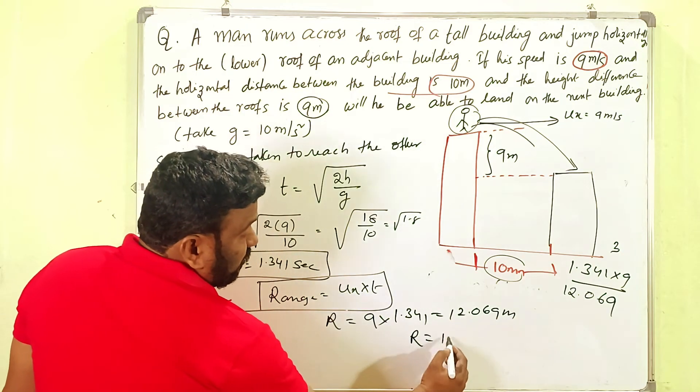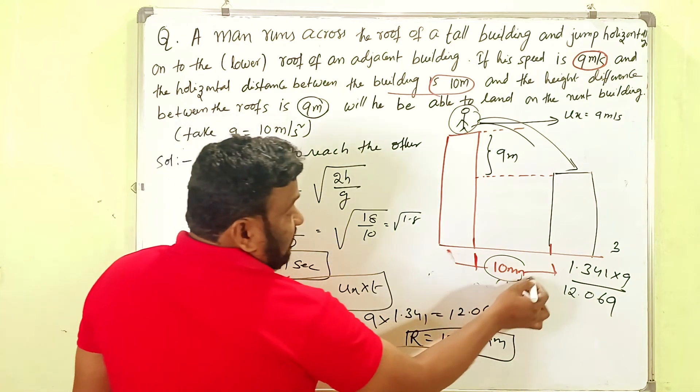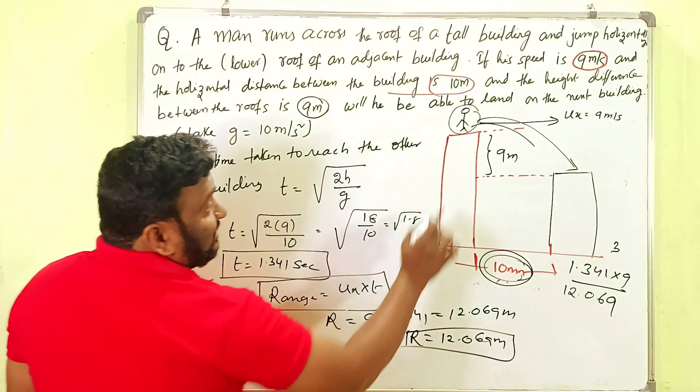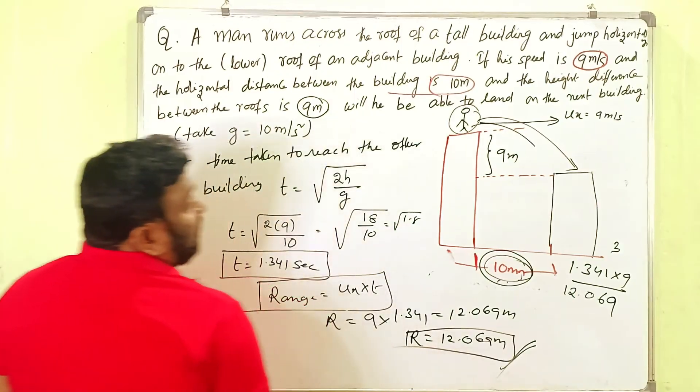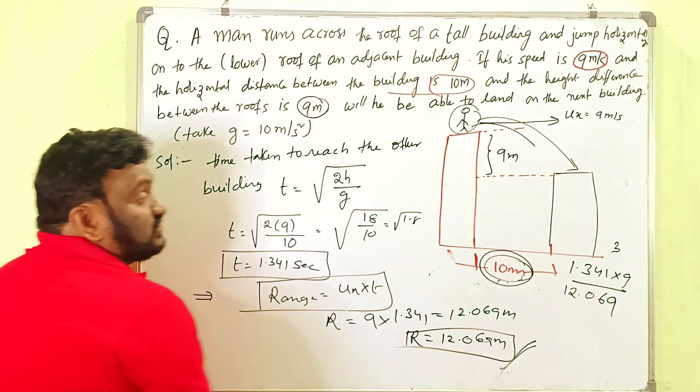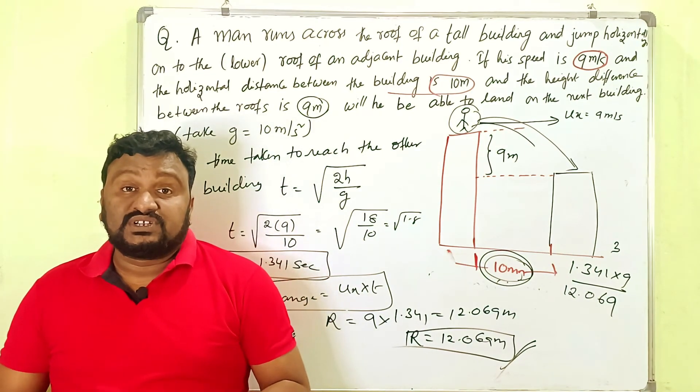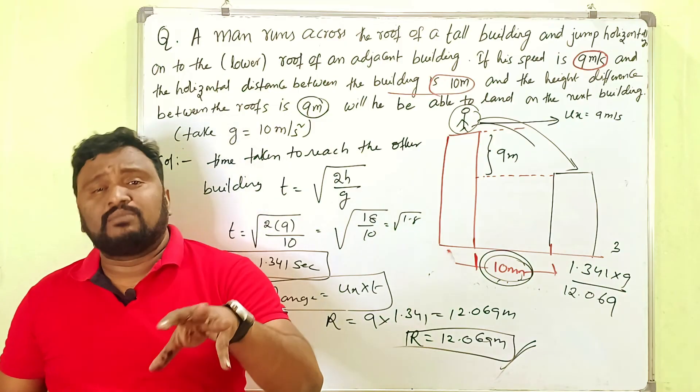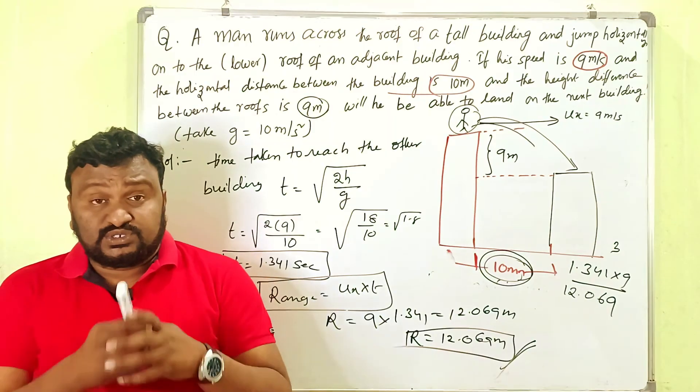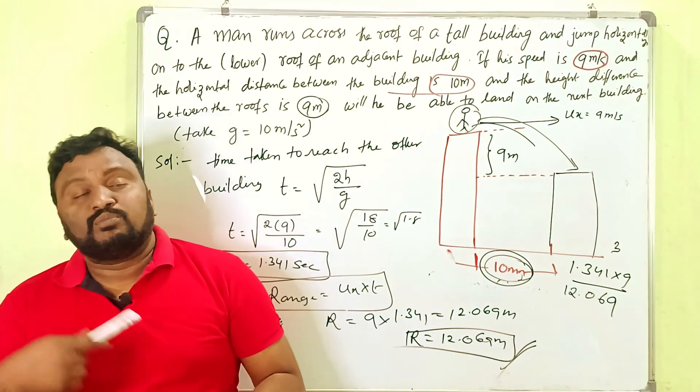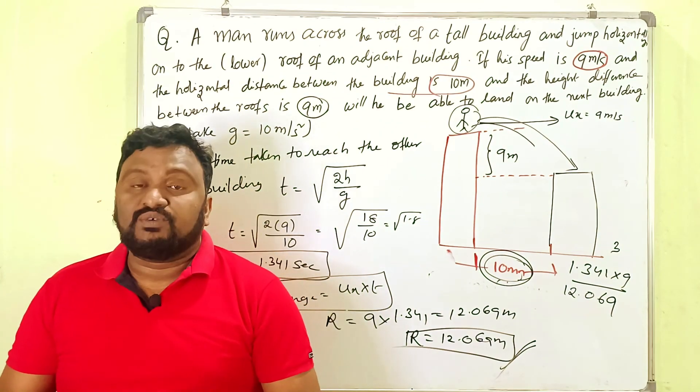So the distance he covered is 12.069 meters. Since this is more than 10 meters, he can land on the next building. This is how we find the horizontal displacement according to the given problem. If you understand this, please like, share, and comment. In my channel I am uploading informative videos along with previous year questions of NEET and JEE. Please support by giving a like, share, comment, and subscribe. Thank you for watching.